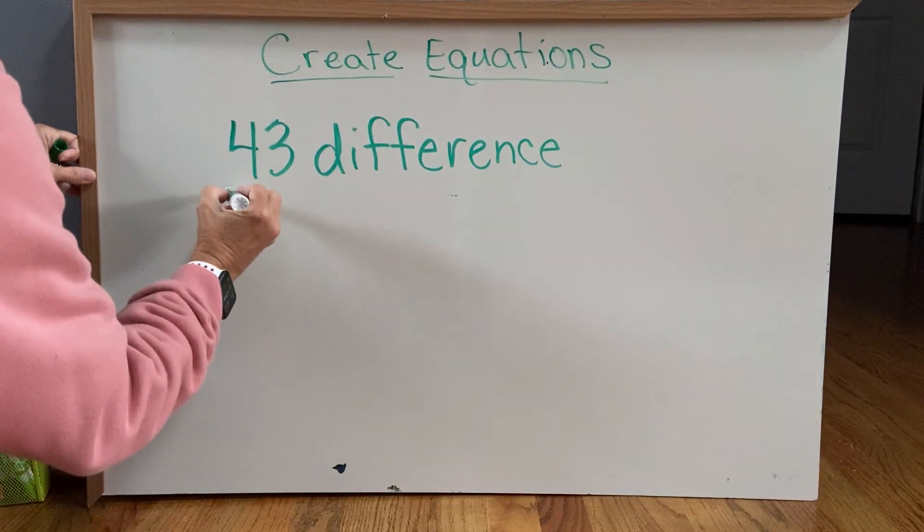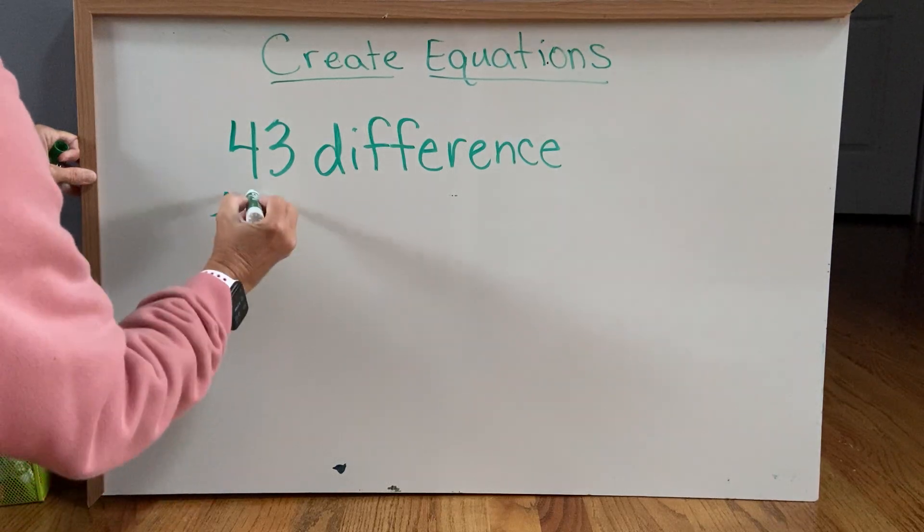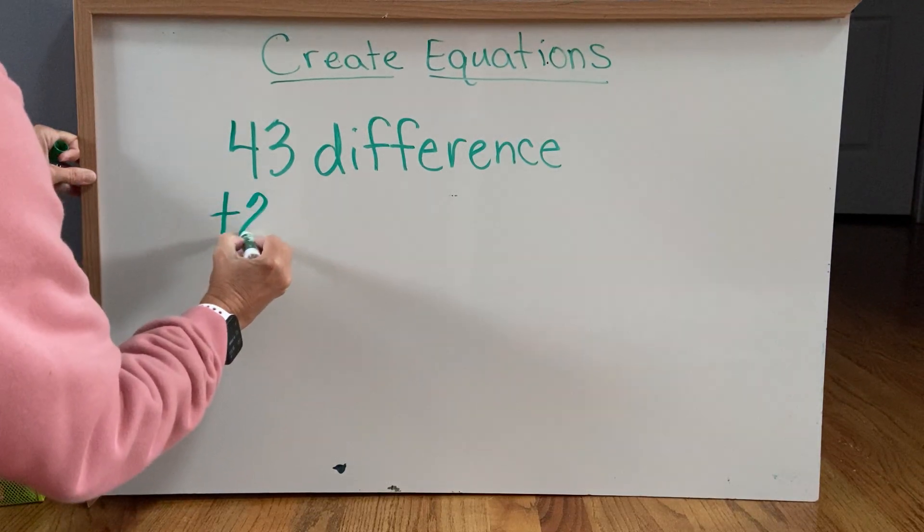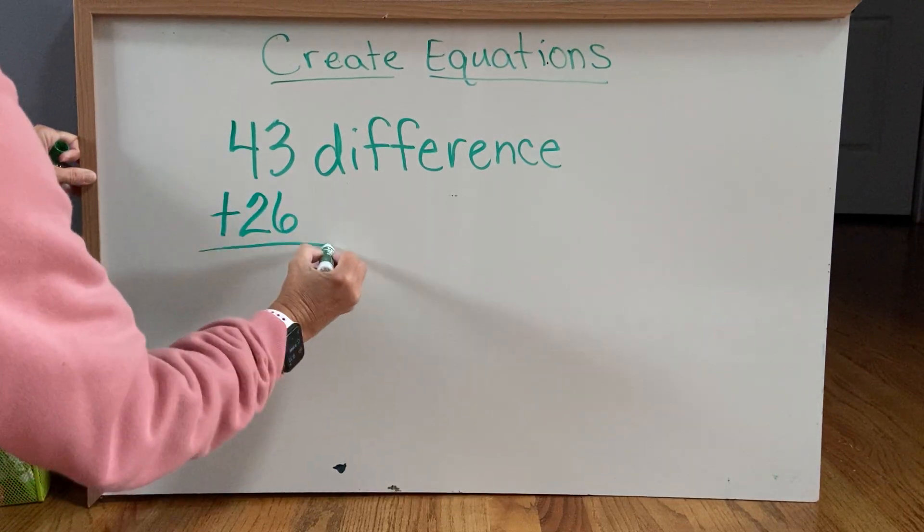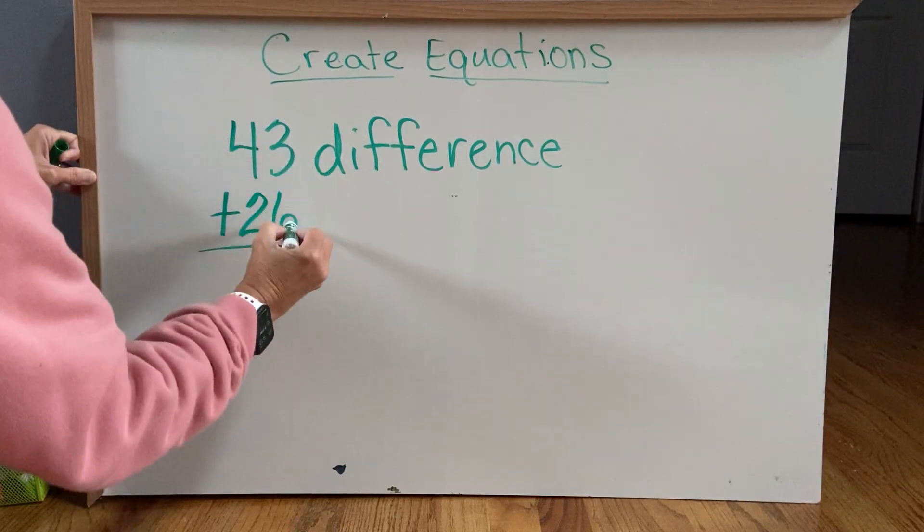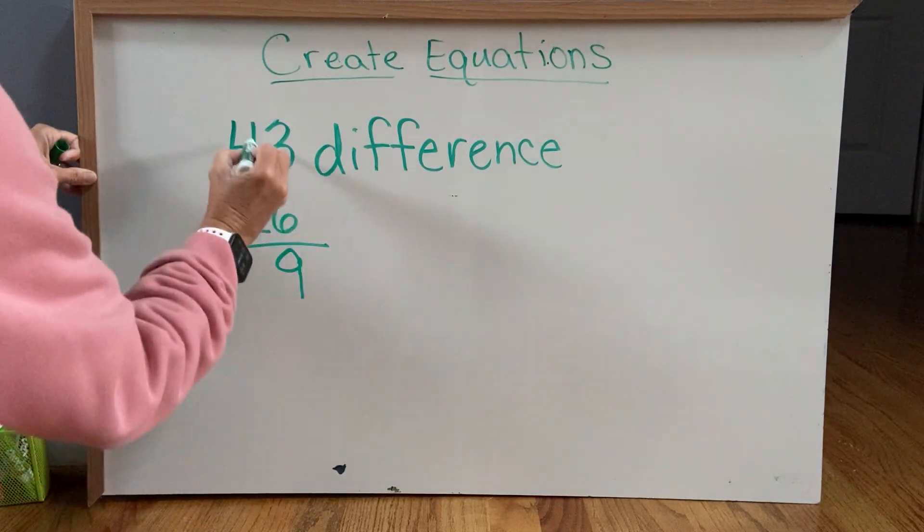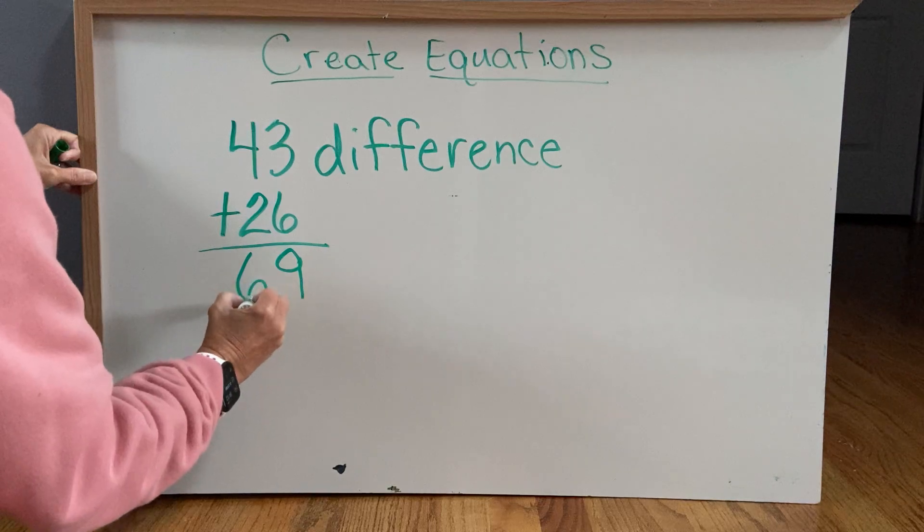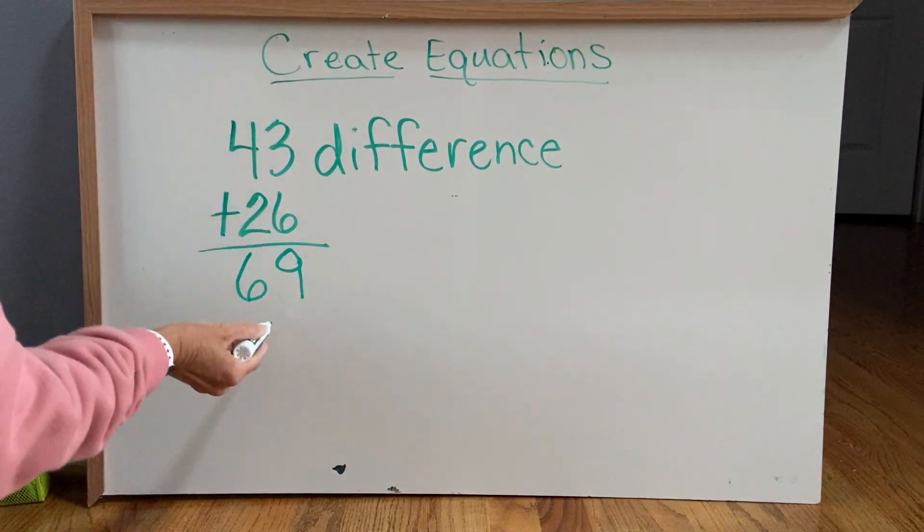So let's just add any random number. I'm going to say 26. So 43 plus 26, 3 plus 6 is 9, 4 plus 2 is 6, and the answer is 69.